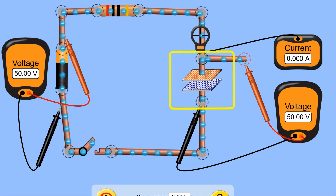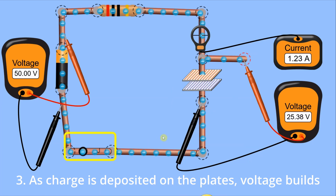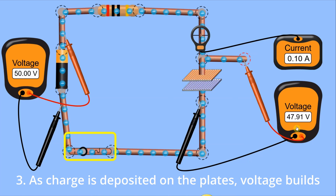I'll open up the circuit and discharge the capacitor to see the third thing. The third thing is that as the charge is deposited, the voltage on the capacitor builds up over time. I close that circuit and you can see the voltage is building up. How quickly that voltage builds up depends on the current and on the size of the capacitor. The higher the current, the faster the charges get deposited. The larger the capacitor, the more space there is for charges, so it takes longer for the voltage to reach its maximum — in this case 50 volts, and then everything stops.